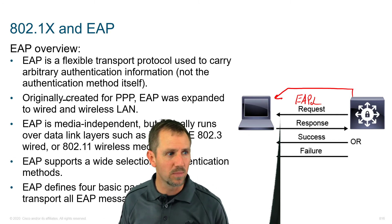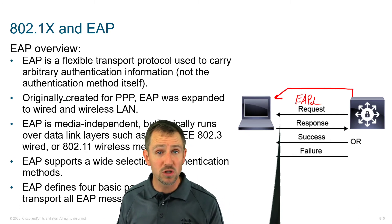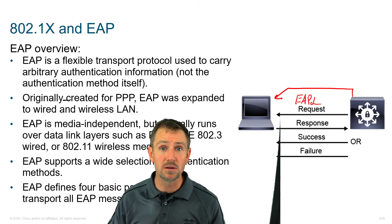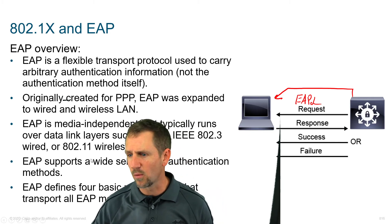One of the things that makes this possible is EAP — the conversation happening between the end user and the gateway to the network. That gateway could be a switch, a wireless access point, or in some scenarios your firewall.